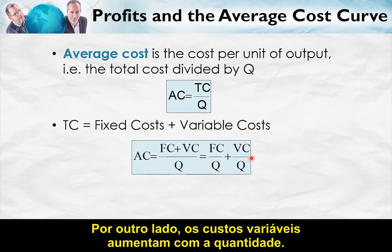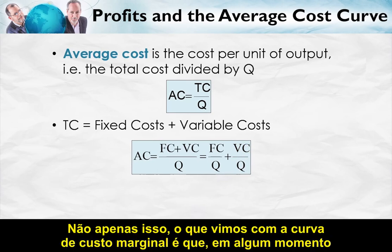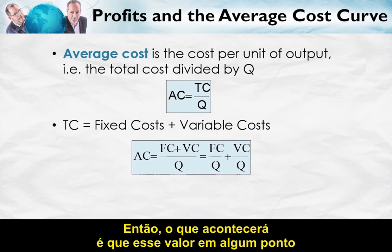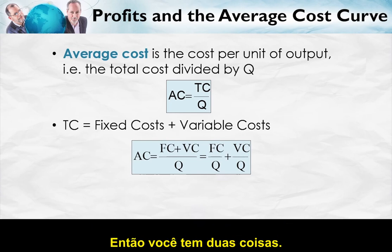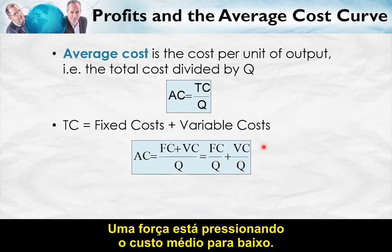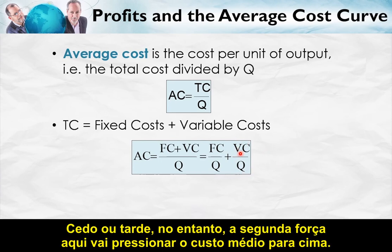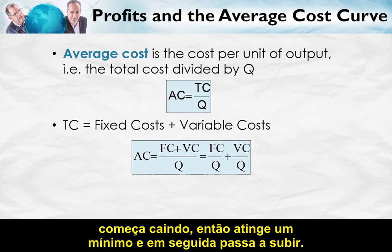On the other hand, variable costs increase with quantity. Moreover, what we saw with the marginal cost curve is that at some point, your variable costs are going to increase faster than quantity. So variable cost divided by quantity is going to get bigger and bigger. So you have two forces: one driving average cost down, particularly strong at the beginning, and eventually the second force driving average cost up. That gives us our typical U-shape: falling, reaches a minimum, and then rising.